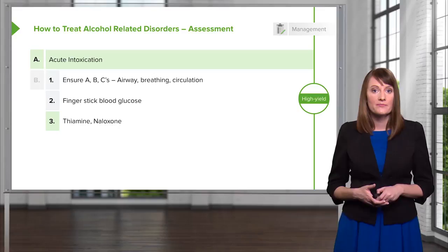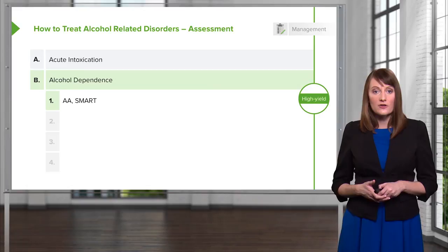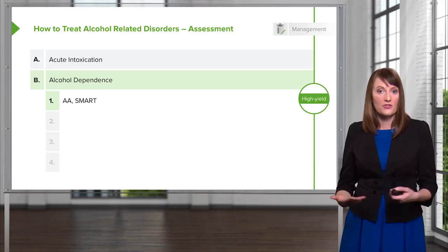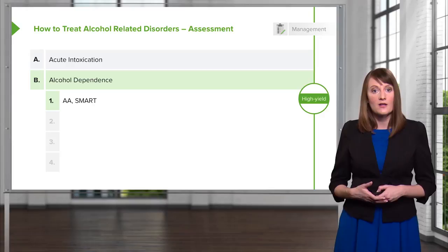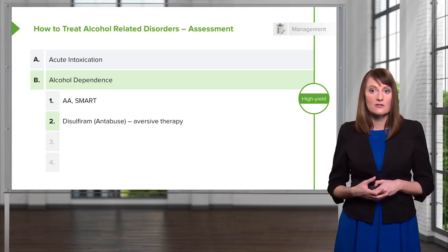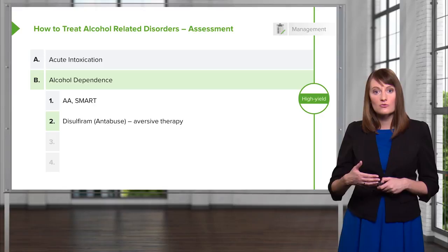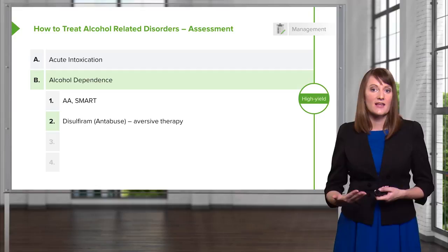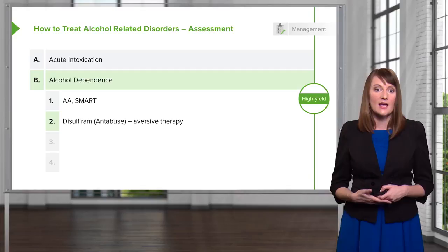For alcohol dependency, you're going to treat the patient by referring them to something supportive like Alcoholics Anonymous or Smart Recovery, which is a newer version of group therapy helping people follow a sobriety program through supportive peers. You might also think about doing aversion therapy by giving them disulfiram or Antabuse — a medication taken daily that causes a terrible reaction if the patient consumes alcohol, including facial flushing and nausea, meant to prevent any alcohol ingestion.